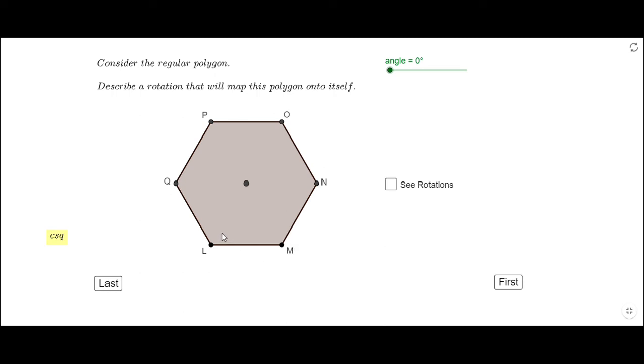The central angle is 60°, so any multiple of 60° will be a good angle to rotate this polygon around its center to map onto itself. Let's check that: 60° is the first angle, 120° the second choice, 180°, 240°...